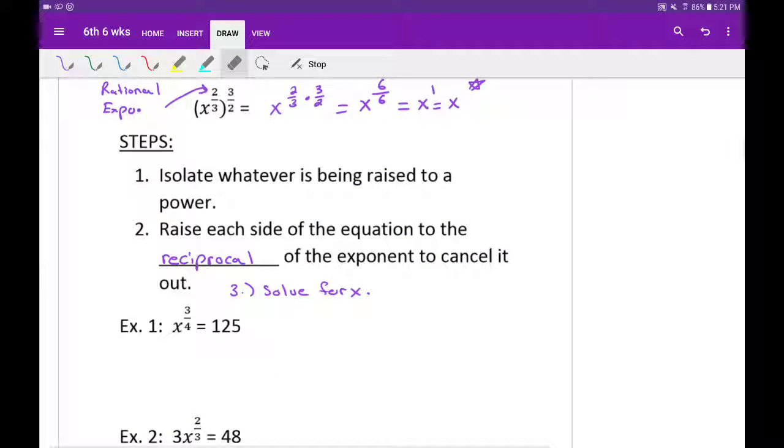Alright, in this one we're going to solve rational exponents. Same steps we've been doing all week. We're going to isolate something. In this case, we're going to set two. We're going to raise each side of the equation to the reciprocal exponent to get them to cancel out. And of course, we're going to solve for x. Alright, so let's go ahead and get started with this.